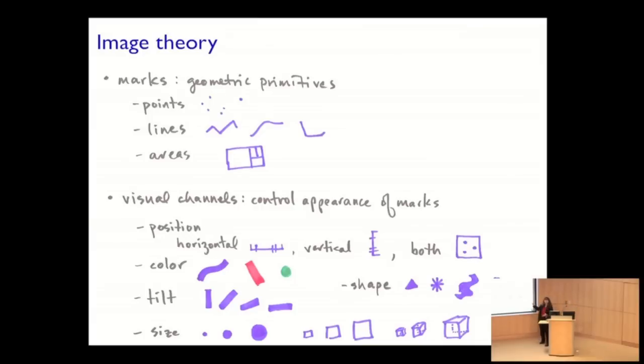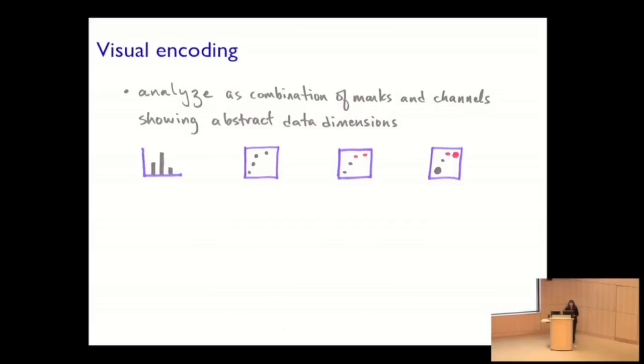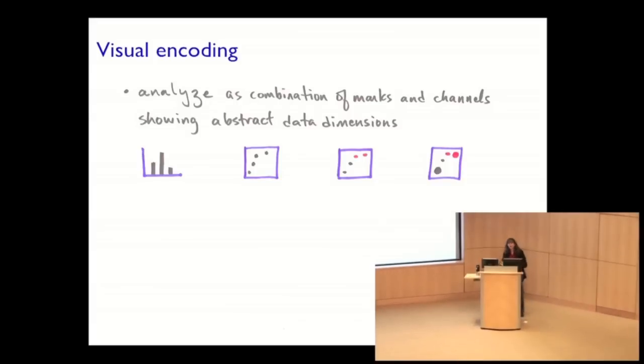So this could be things like the spatial position of the marks, either horizontally or vertically, or both for a planar spatial position. It could be things like color, or the orientation or tilt, the size, whether it's area or volume, shape. So there's a lot of, this is not even a complete list, this is just a few of them. So once we have this vocabulary of a mark which is a geometric primitive and channels which control their appearance, now we can go back and think about how it is that we can analyze these visual encodings using marks and channels.